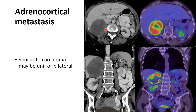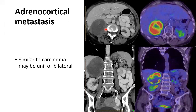Adrenal metastasis is similar in appearance to adrenocortical carcinoma and may be unilateral or bilateral. Clinically, a primary lesion is almost always identified elsewhere. This example shows adrenal metastasis in the right adrenal gland, with high SUV on PET scan.